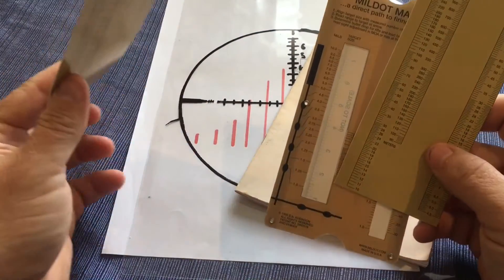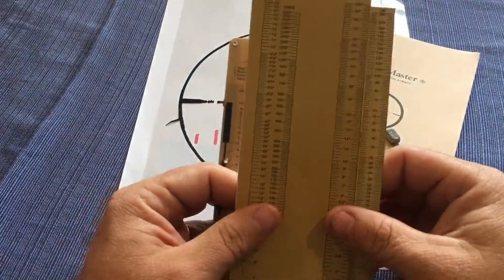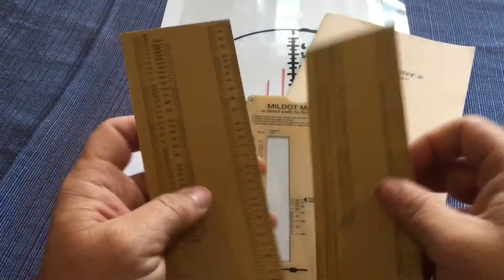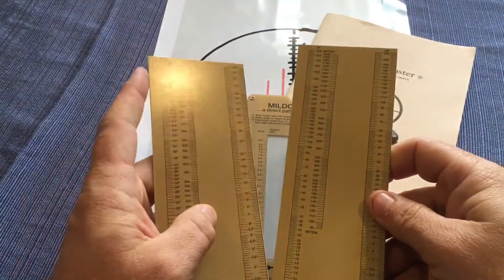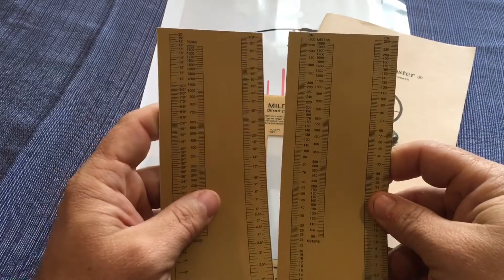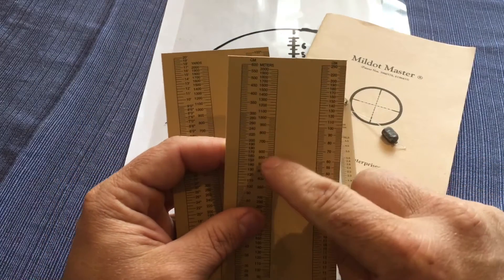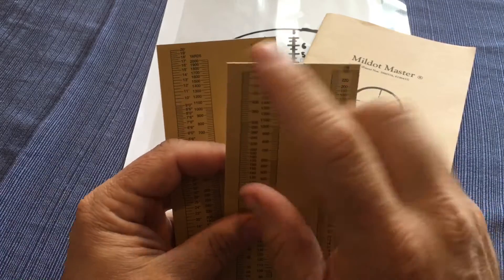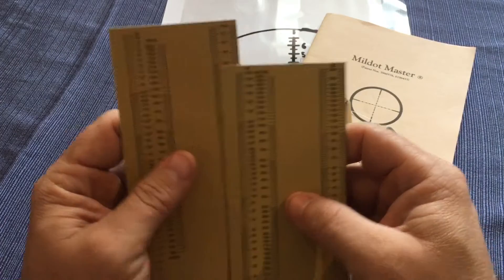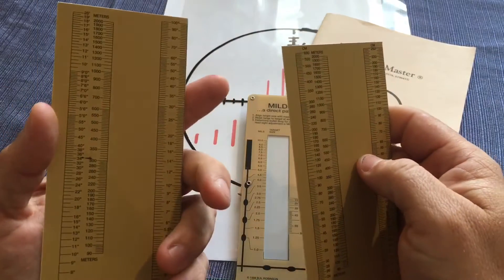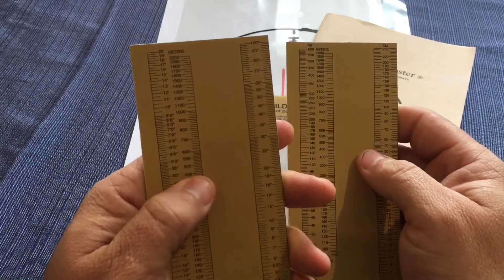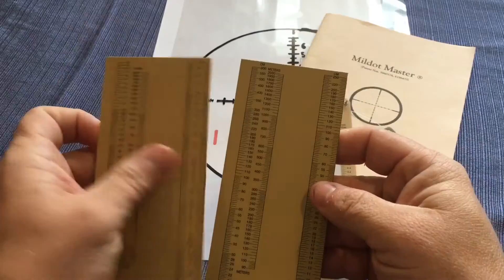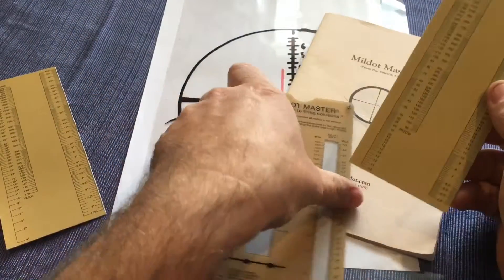The other thing I like about it is there is no real estate left untouched on this. You get heaps of information. You've got two cards. There's no right or wrong here, guys. It really just comes down to what you prefer. This one here is your target sizes, and it is in centimeters here. The other one is in inches. So it depends on whether you like working in MOA, inches, and yards, or centimeters, meters, and mils. I use mils, so I'm going to put this one to the side.